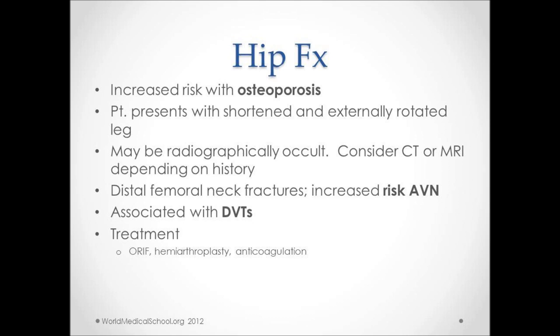Hip fractures are common in patients with osteoporosis. Patients typically present with a shortened and externally rotated leg. Radiographically they may be occult, and CT or MRI may be necessary. Distal femoral neck fractures have a risk of avascular necrosis. DVTs are commonly associated with hip fractures, and treatment includes anticoagulation, open reduction and internal fixation, and possibly hemiarthroplasty, depending on the location.